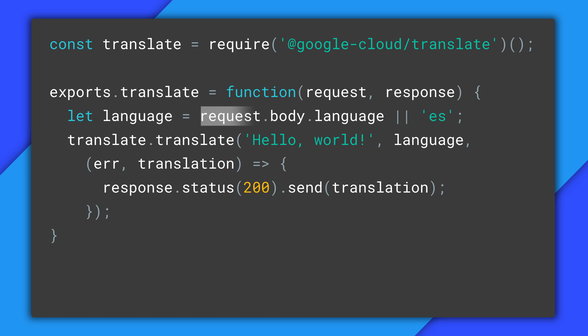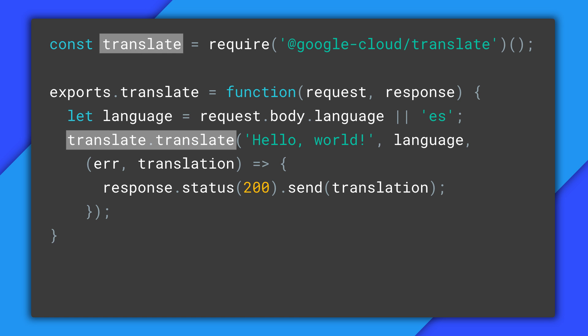Let's use the language value from the incoming request and use it to translate hello world into that language. Cloud Functions are automatically authenticated to other Google Cloud APIs, so we can call the Translation API without having to manage service accounts or OAuth.